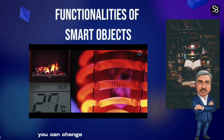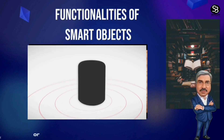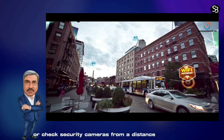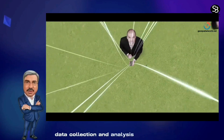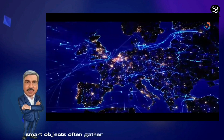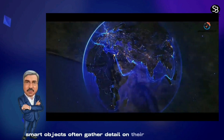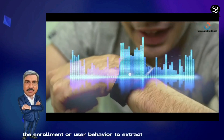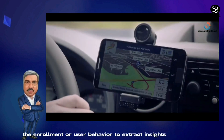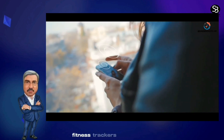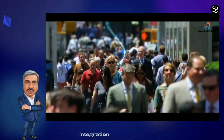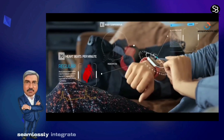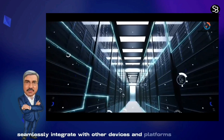For example, you can change your home's temperature or check security cameras from a distance. Data collection and analysis: Smart objects often gather data on their usage, the environment, or user behavior to extract insights. For example, fitness trackers collect user activity data.